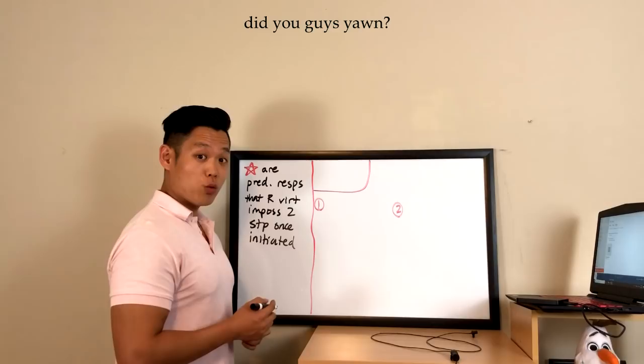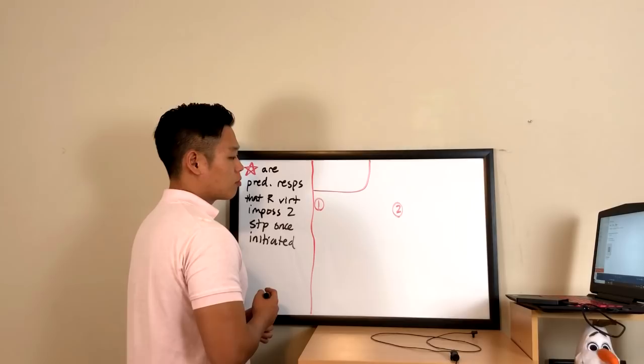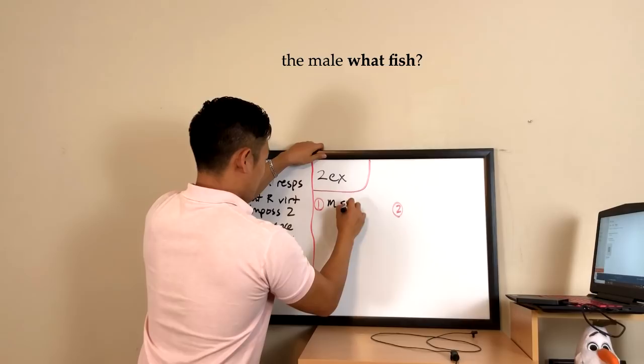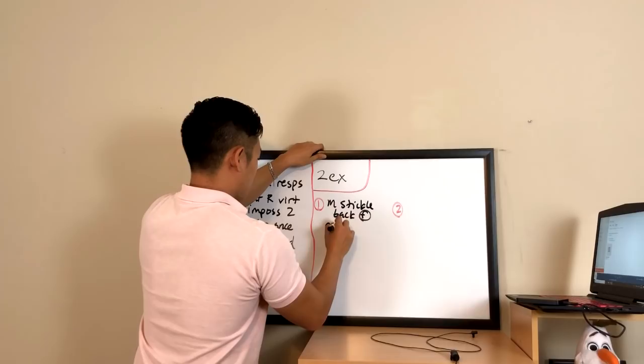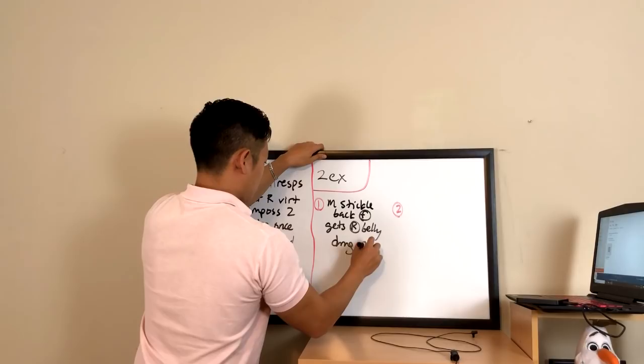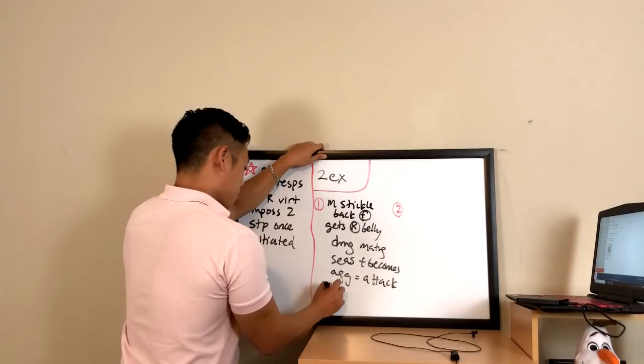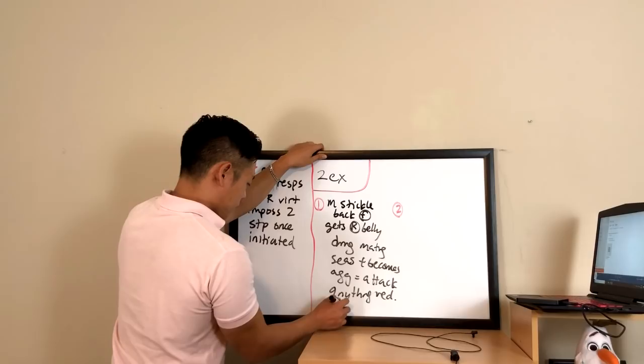Let me illustrate with a couple of examples. The male stickleback fish gets a bright red and blue belly during its breeding season. It's a very aggressive fish, so if it sees another male with a red stomach it'll attack that male. However, if you put a red ball near a stickleback, it'll attack the red ball too. It automatically responds to the presence of anything red by attacking — that action is fixed for the stickleback.